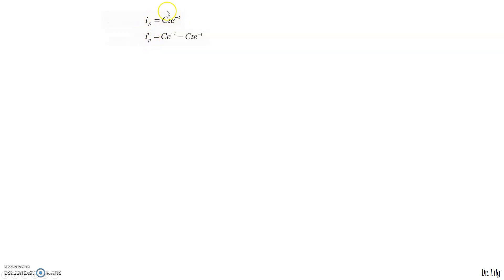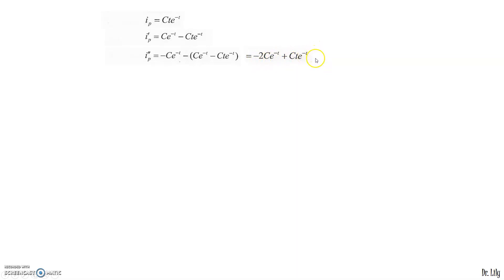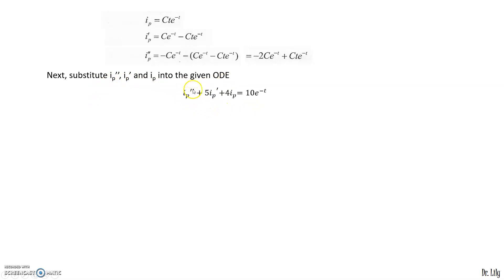To find the value of C, differentiate ip = C·t·e^(−t) twice. Using the product rule with u = Ct and v = e^(−t): ip' = C·e^(−t) − C·t·e^(−t). Differentiating again: ip'' = −2C·e^(−t) + C·t·e^(−t). Now substitute ip'', ip', and ip into the ODE: ip'' + 5·ip' + 4·ip = 10e^(−t).